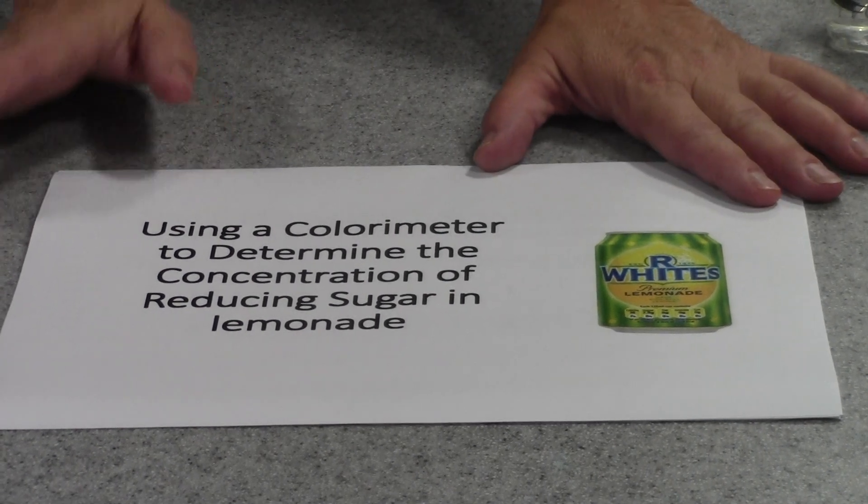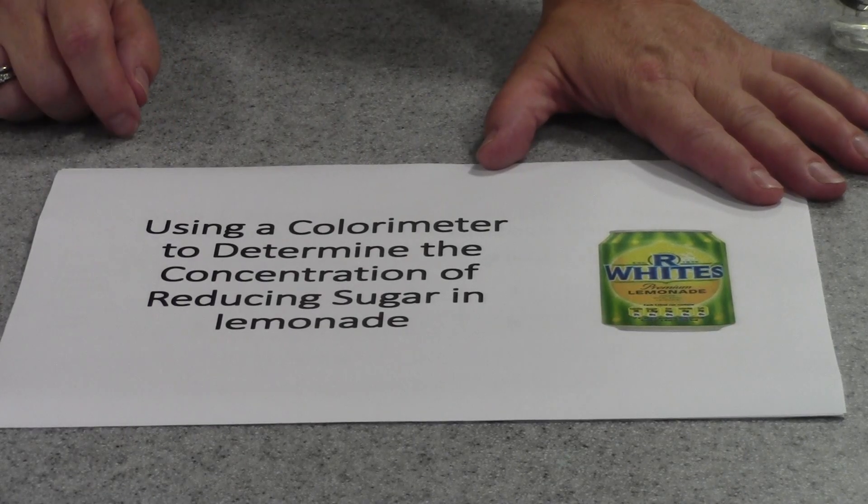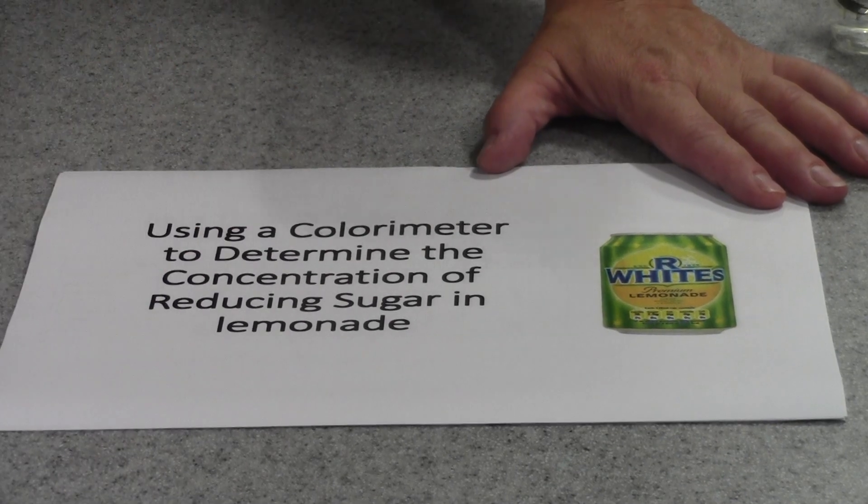I'm going to show you a method that involves using a device called a colorimeter to determine the concentration of reducing sugar in lemonade.